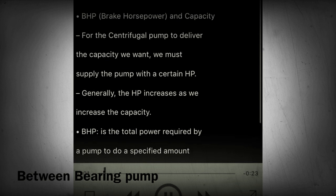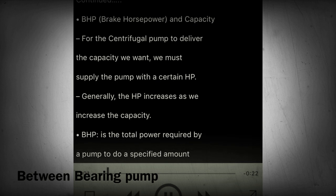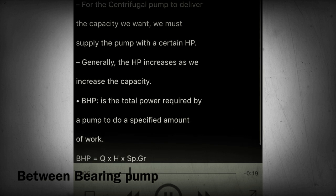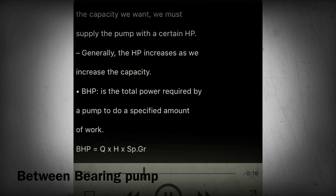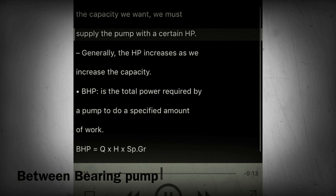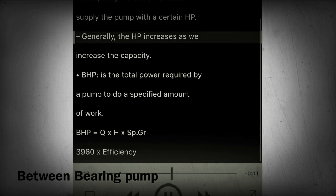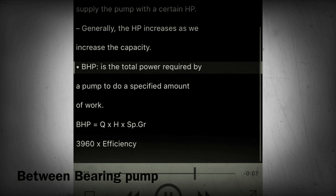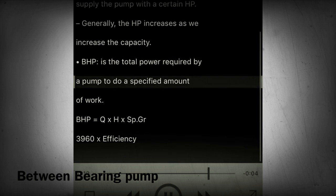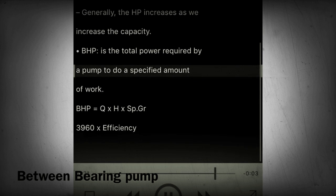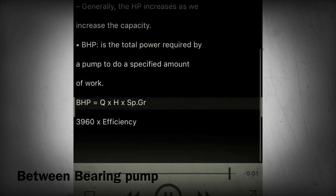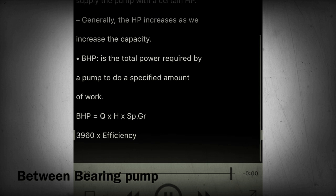Section 23 - Centrifugal pump curves: BHP (brake horsepower) and capacity. For the centrifugal pump to deliver the capacity we want, we must supply the pump with a certain HP. Generally, the HP increases as we increase the capacity. BHP is the total power required by a pump to do a specified amount of work. BHP = (Q × H × SPGR) / (3960 × efficiency).